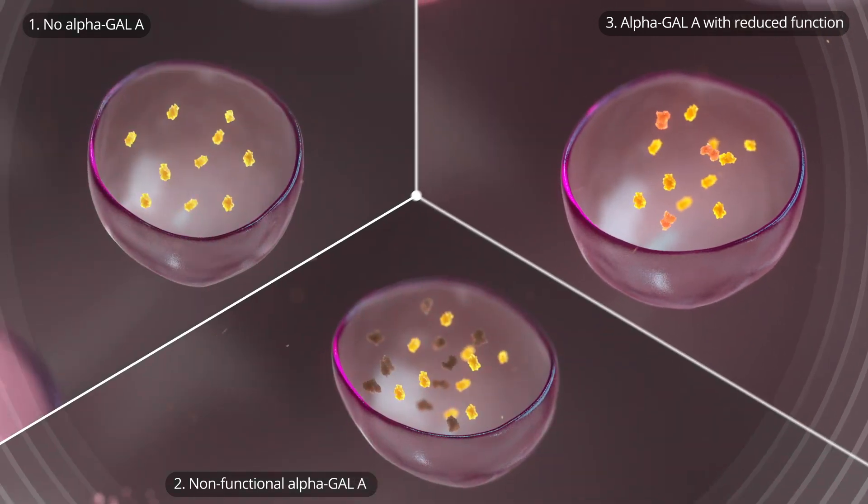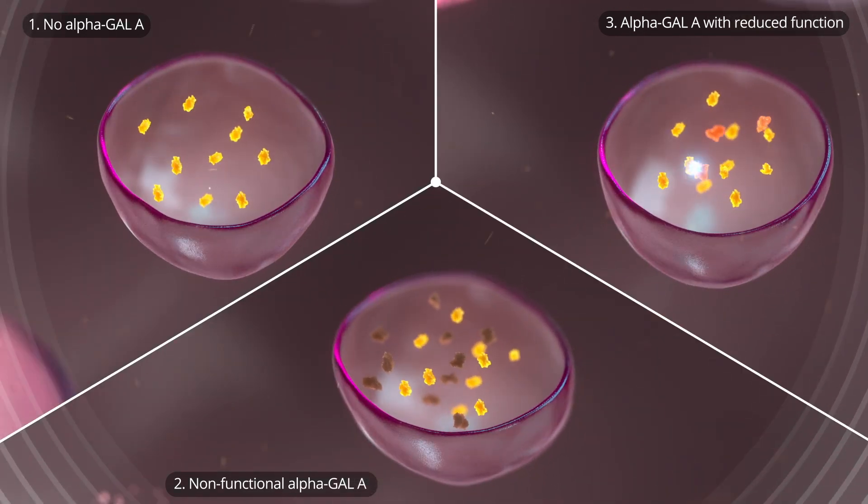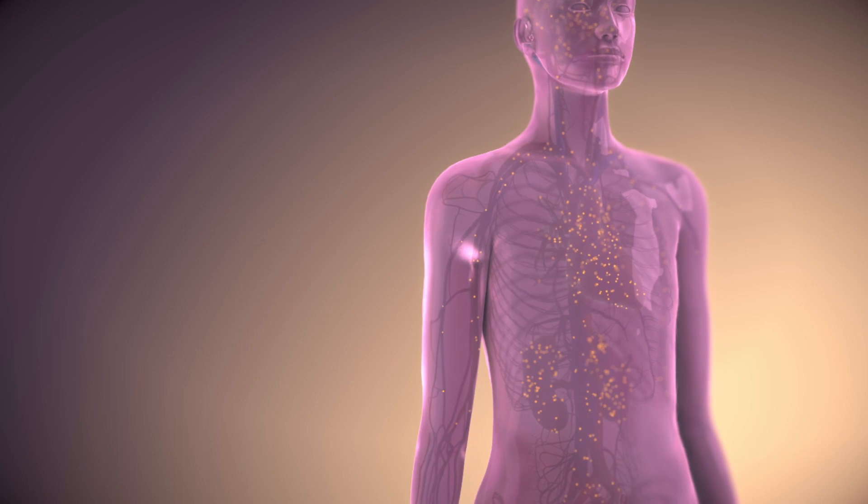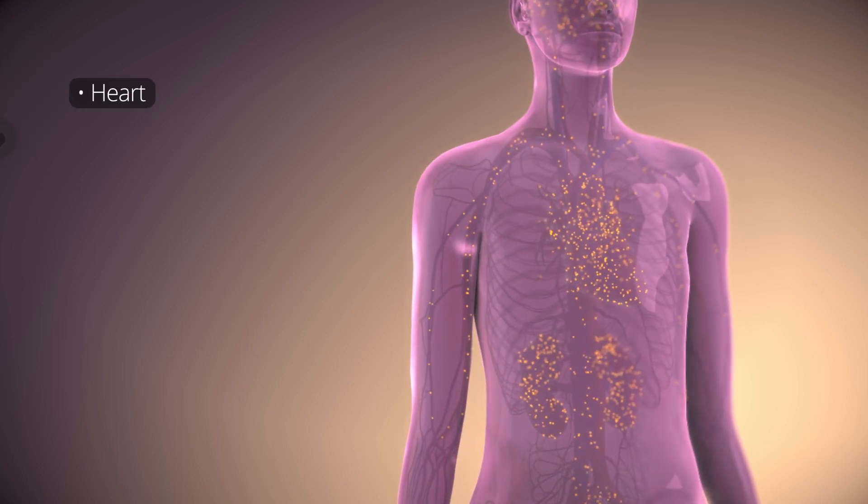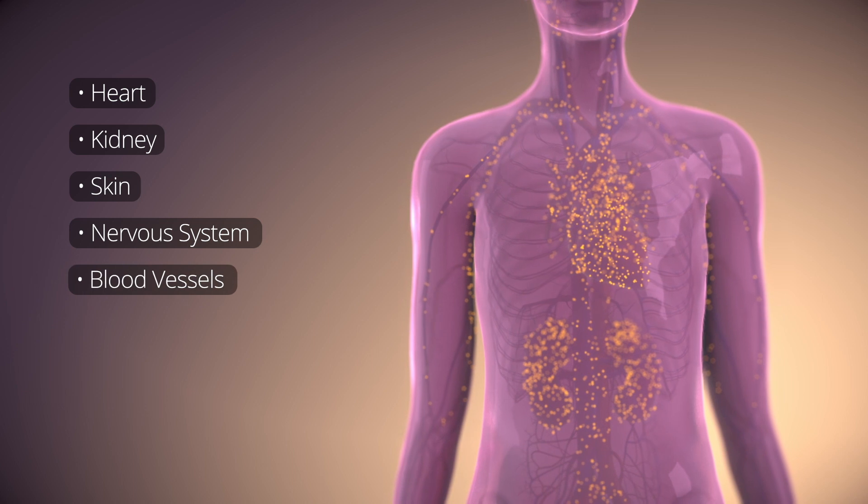But in all cases, there is not enough working enzyme to break down GL3, which builds up in the cells of the heart, kidney, skin, nervous system, and blood vessels.